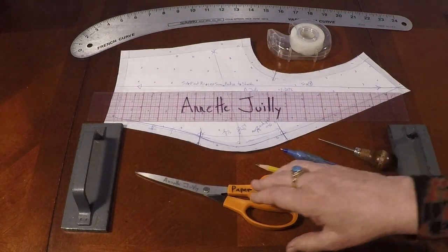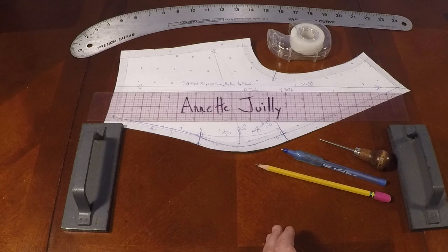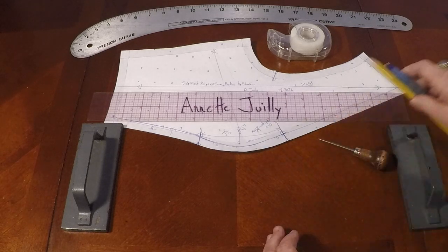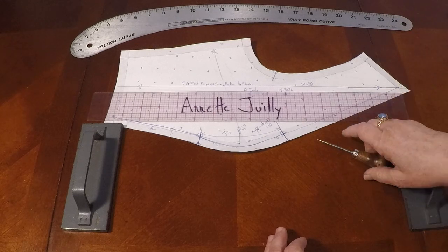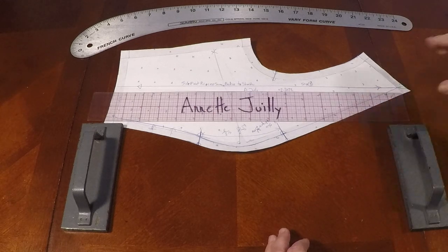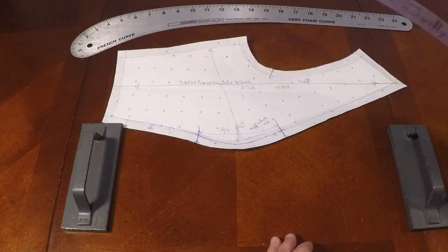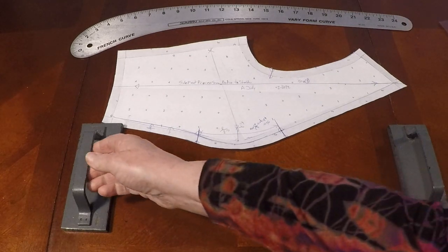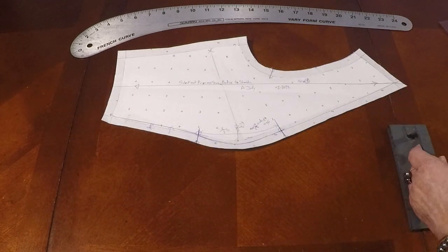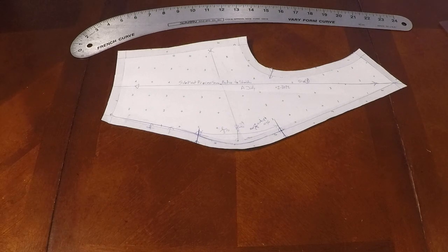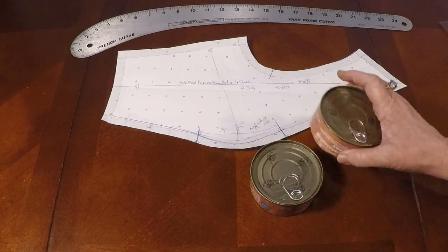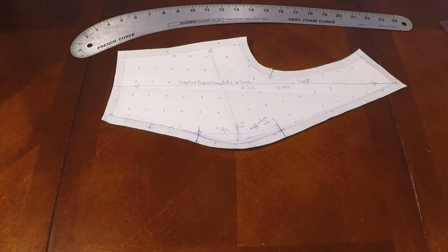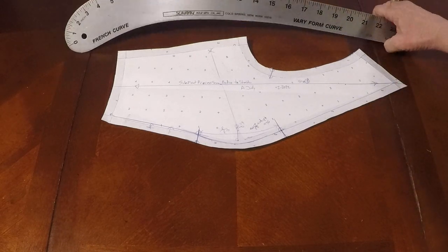So you're going to need your scissors, pencil and pen, some tape, perhaps an awl, two by 18 inch clear plastic ruler, some pattern weights. And if you don't have pattern weights, you can always use little cans. And we have our hip curve.